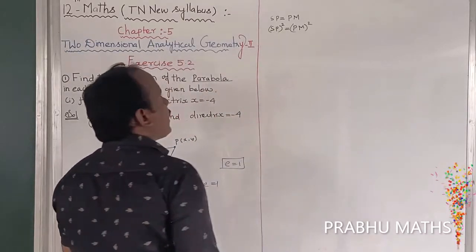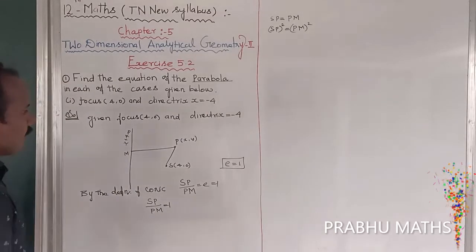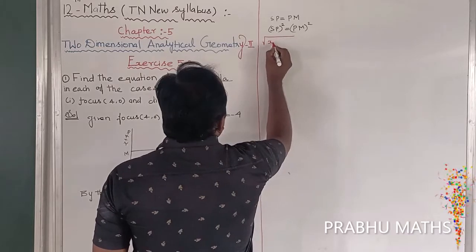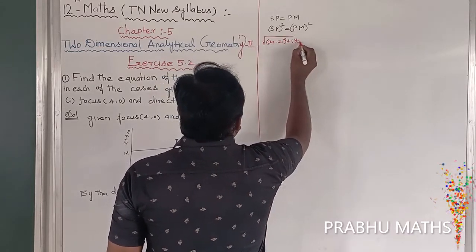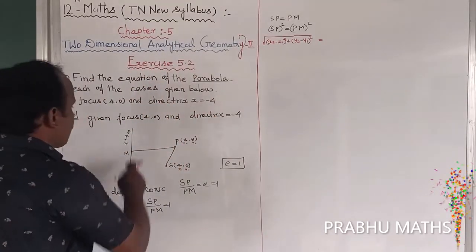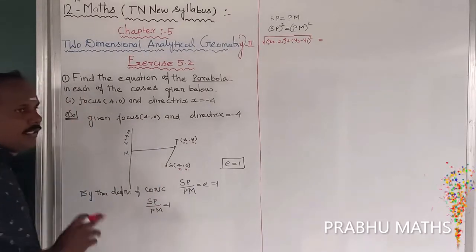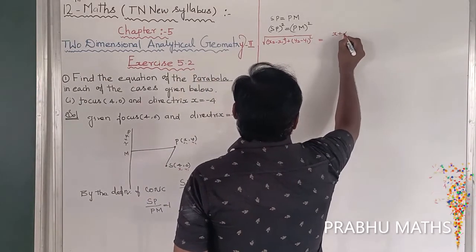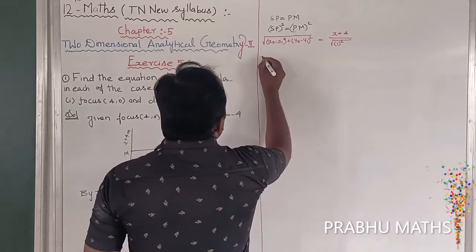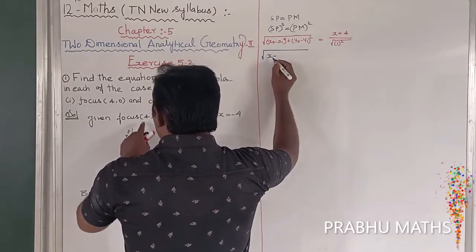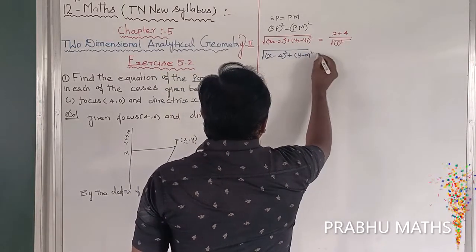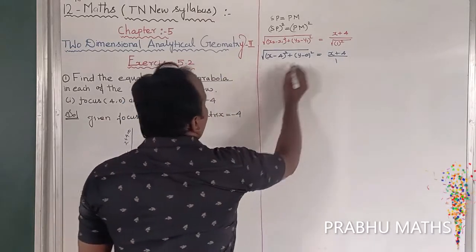S is the fixed point and P(x, y) is any point on the plane. Using the distance formula — root of (x2 - x1)² + (y2 - y1)² — and the distance from point to line formula, we get: SP² = (x - 4)² + (y - 0)², and PM = (x + 4) / 1.